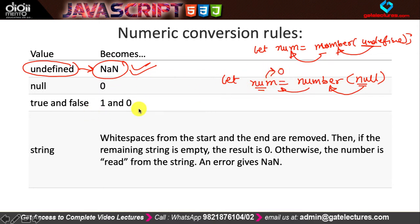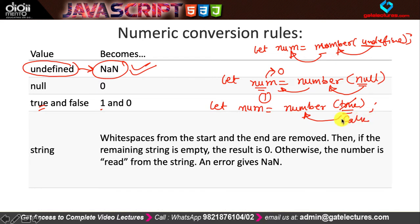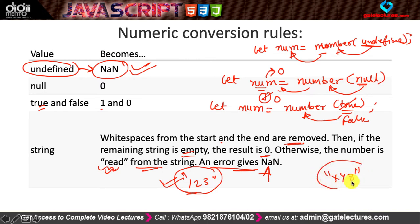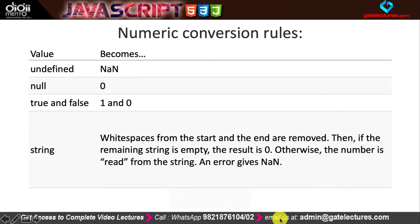If you do 'Number(true)', it gives 1, and 'Number(false)' gives 0. For strings: if the string contains only digits like '123', it converts successfully to the number 123. But if the string contains non-numeric characters like 'XYZ', the result is NaN. White spaces at the start and end of a string are removed (trimmed) first; if the remaining string is empty the result is zero, otherwise the number is read from the string.